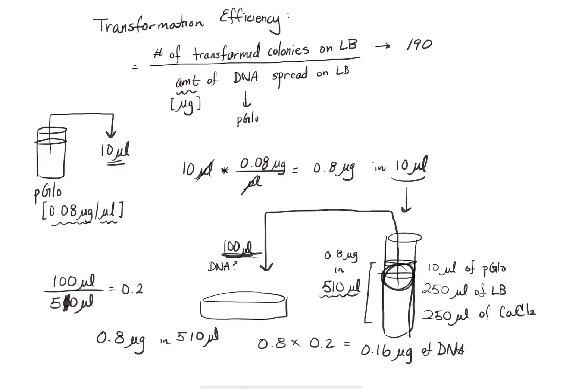So that's it right there, 0.16 micrograms. So I can take this value and essentially divide 190, that's the number of colonies that I had, and put 0.16 micrograms there. And this should give me something like 1,187 transformants per microgram of DNA that was spread on the plate. So alternatively, I can turn that into 1.187 times 10 to the power of 3 transformants per microgram of DNA. And that is how you calculate your transformation efficiency.